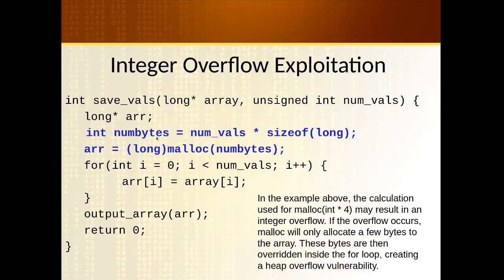We determine how many bytes we need to copy by taking the size of the long data type — because that's the kind of value we're storing — and multiplying that by the number of values we want to store. If a long is eight, six, or four bytes, multiplying by the number of values gives us the total number of bytes. We then use that in our call to malloc and typecast to a long pointer before assigning into the array.